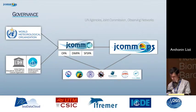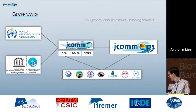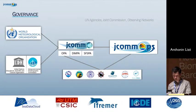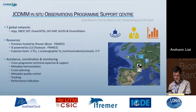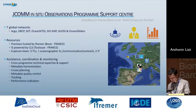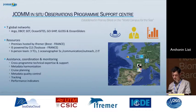Through JCOMO and its observation program area, we work for seven observing networks: namely Argo, DBCP, SOT, OceanSITES, Gership, GLOSS, and the latest to join, ocean gliders. We are based at IFREMER in Brest, France.